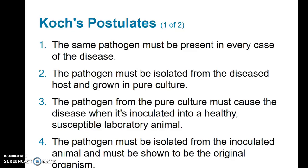The second postulate is that the pathogen must be isolated from the diseased host and grown in a pure culture. Third, the pathogen from the pure culture must be reintroduced into a host and cause the same disease when inoculated into a healthy lab animal. The fourth postulate is that you must be able to isolate the pathogen from that lab animal and show that it is the same original organism isolated in step two.